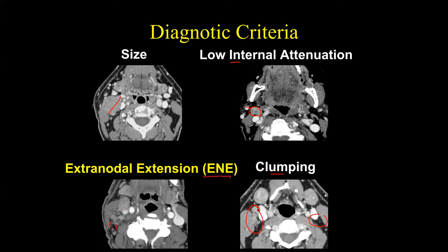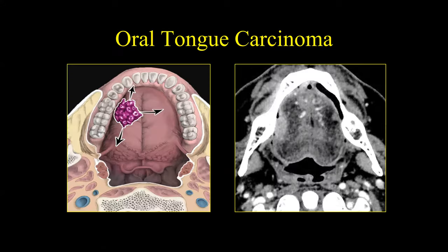We can see extranodal extension radiologically, but in the updated AJCC staging system it is considered a clinical diagnosis rather than a purely radiological one. Now, with the classification and size criteria covered, let's discuss an approach for evaluating lymph nodes of the head and neck. When we perform a CT or MR scan, we must look at all lymph nodes, but I'll share an approach to increase detection of lymph node metastasis.